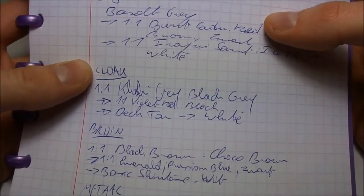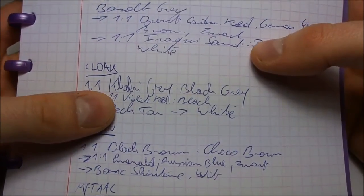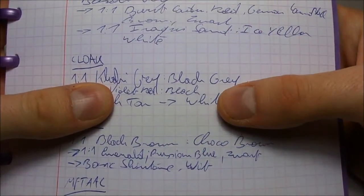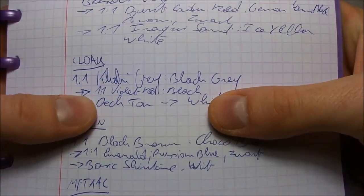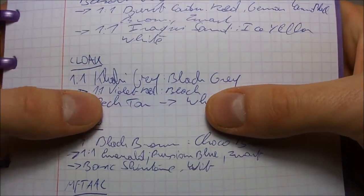So here for the cloak, I mixed some khaki grey with some black grey. Then the first arrow means shading color - there's a mix of violet red and black.